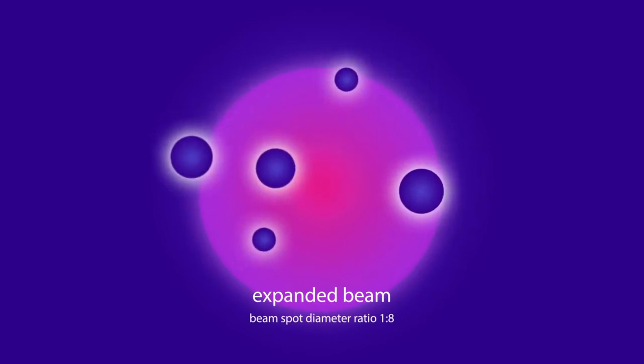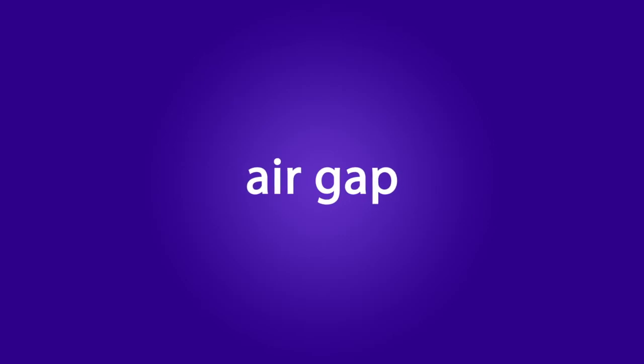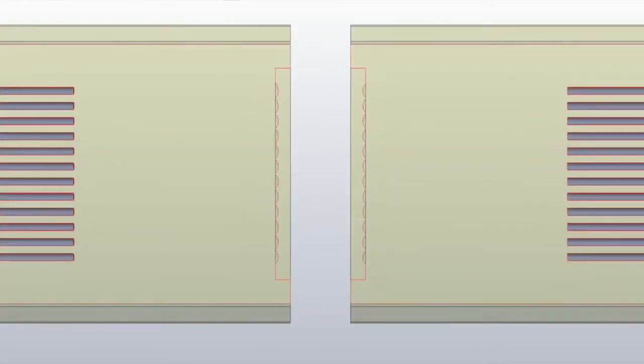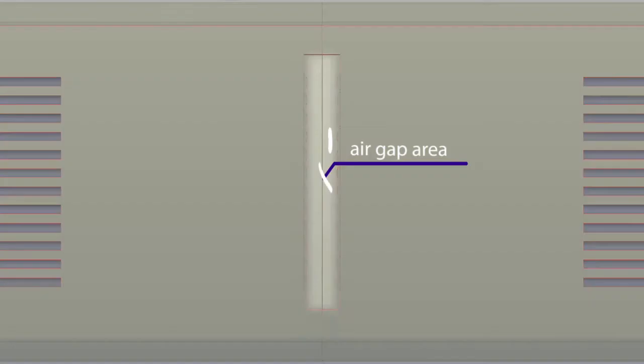In addition to the beam expansion, the air gap plays two important roles to innovate the connector's features. First, you can easily blow away dust when it contaminates the connector because the dust is never smeared across the surface.